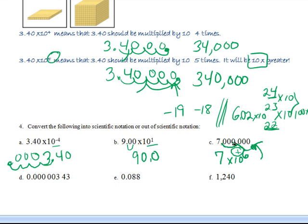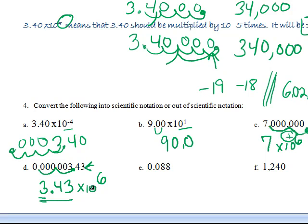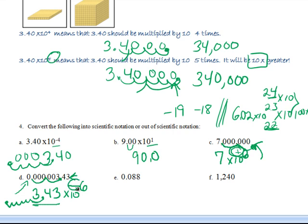For the flip side — a small decimal number — move the decimal 6 places. Notice you always have one digit to the left of the decimal. To get from 3.43 back to that tiny number, you'd need to divide by 10 six times, so it's a negative exponent: 3.43 times 10 to the negative 6th. Just ask yourself: if I reverse it, do I multiply (positive exponent) or divide (negative exponent)?